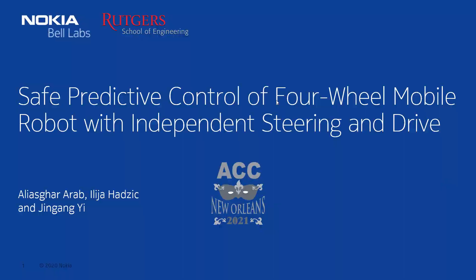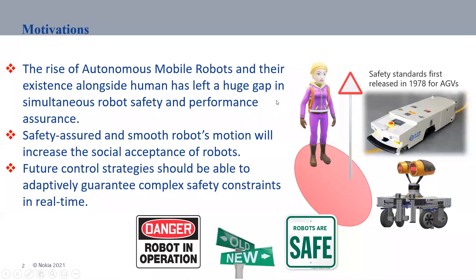Let's discuss the motivations of this work. The rise of autonomous mobile robots and their existence alongside humans has left a huge gap in simultaneous robot safety and performance. Unlike the previous AGVs or automated guided vehicles that were being used in industry for longer than two or three decades, they were following predetermined paths and the safety was just stopping if there was a human in front of them.